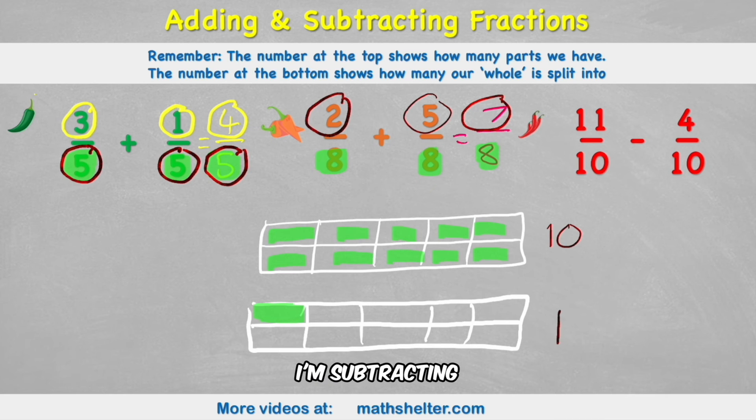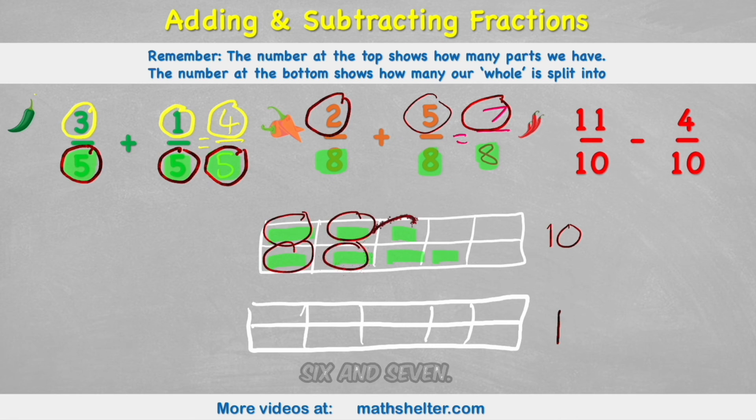But this time, I am subtracting 4. So let's simply remove 4 of these. 1, 2, 3, 4. How many do I have left over? 1, 2, 3, 4, 5, 6, and 7. So my answer is 7 tenths. Let's see if that same rule applied. I had 11 tenths. I had 4 tenths. So therefore, my answer is going to be in tenths. And 11 subtract 4 equals 7. So it works with subtraction as well.